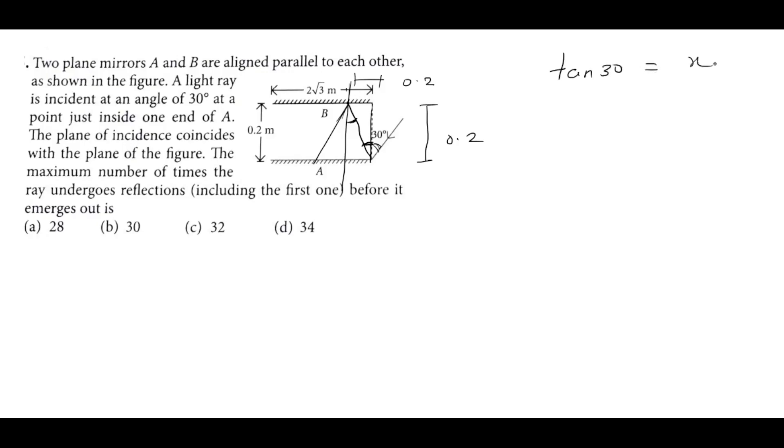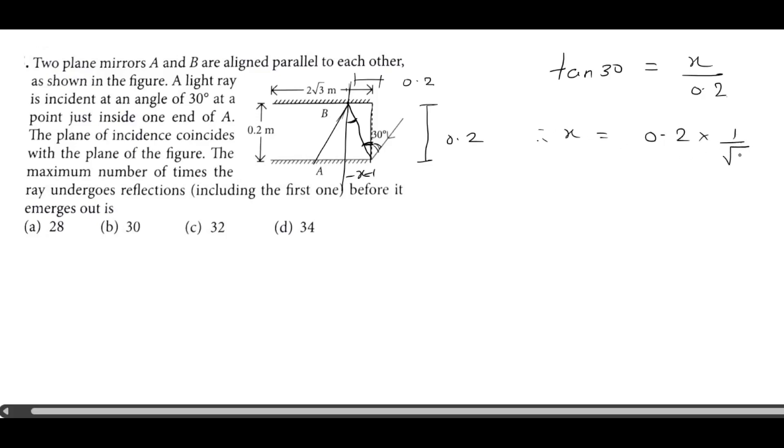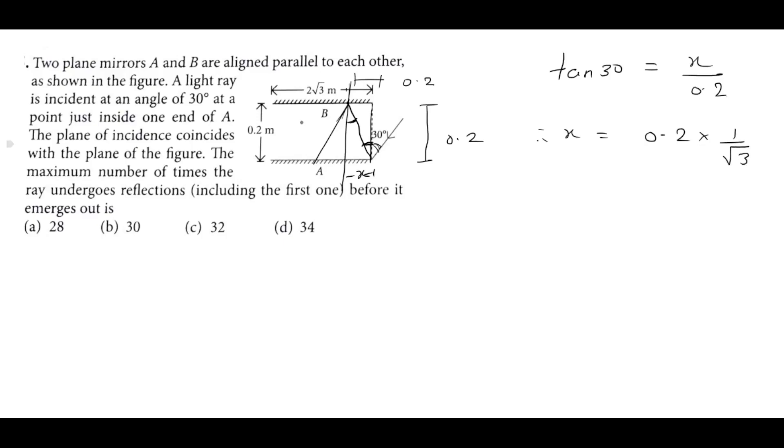So tan 30 degrees, this will be our opposite side. So this value of X unknown, that will divide by the length of 0.2. So X equals 0.2 times tan 30, which is 1 upon root 3. So this is the first reflection, so this is the distance covered.